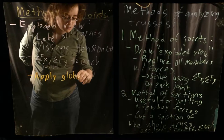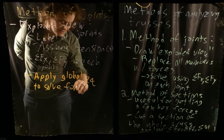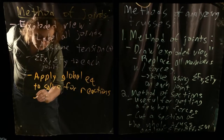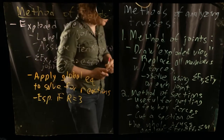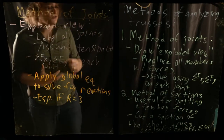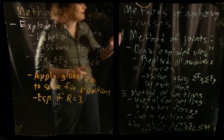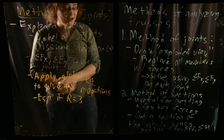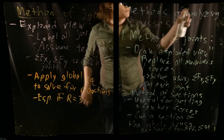Often it is useful to apply global equilibrium to solve for reactions first — especially if you have just three reaction forces. If R equals three, you know that your truss is going to be externally determinate. In other words, you can solve for all of the external reactions using only a single free body diagram of the truss as a whole, making it very easy to directly solve for the reactions and have a starting point for your equilibrium with the method of joints.